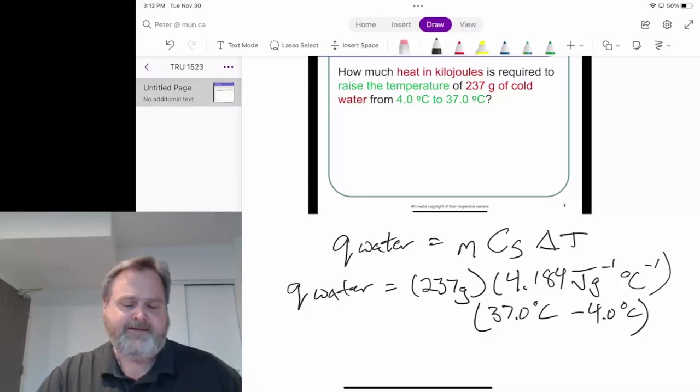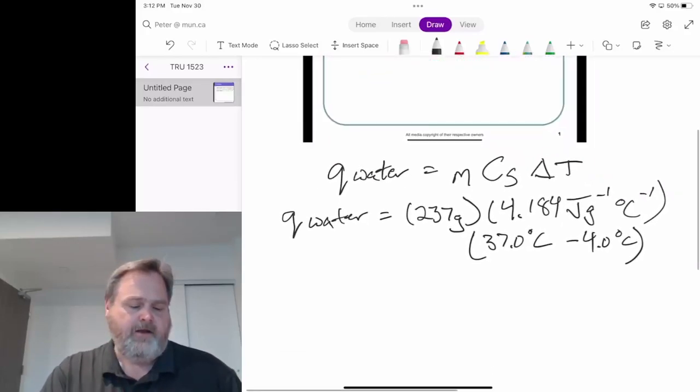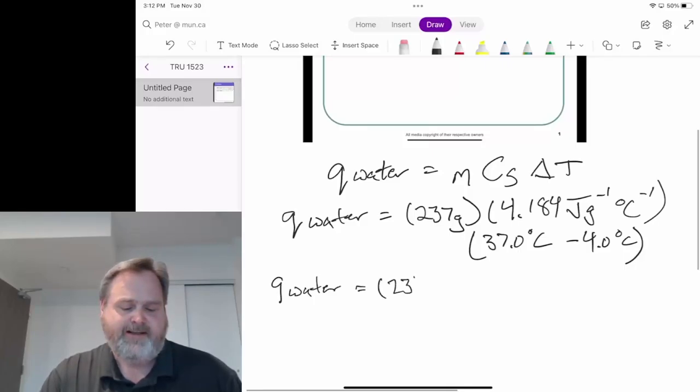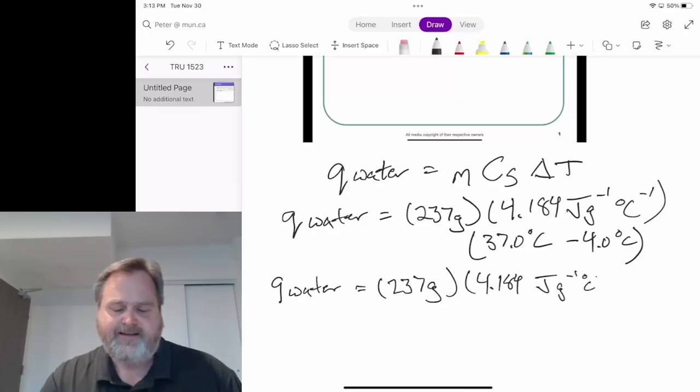With this, we can continue our calculation. Q water is 237 grams times 4.184 joules per gram per degree Celsius. And our temperature change in this case is plus 33.0 degrees Celsius.